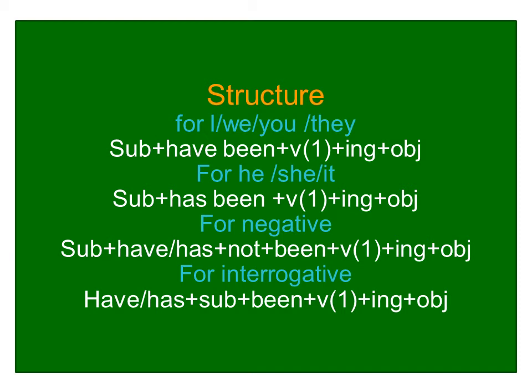For negative, 'have not' or 'has not' is used followed by 'been'. For interrogative, 'has' or 'have' is placed in the first position, and 'been' comes after the subject.